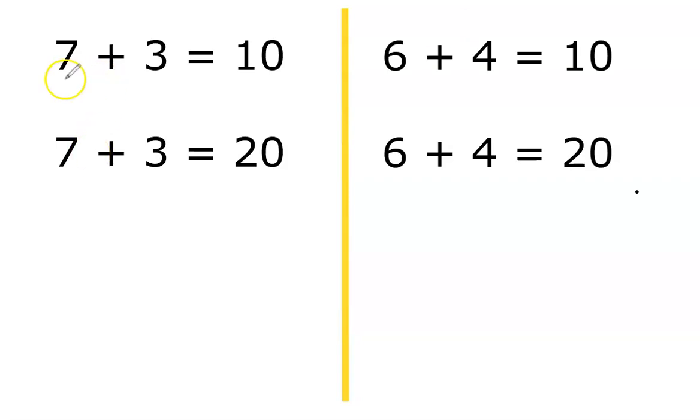Now, we know that 7 plus 3 equals 10. How do we make our number bonds? Using that knowledge, 7 plus 3, make that into 20.